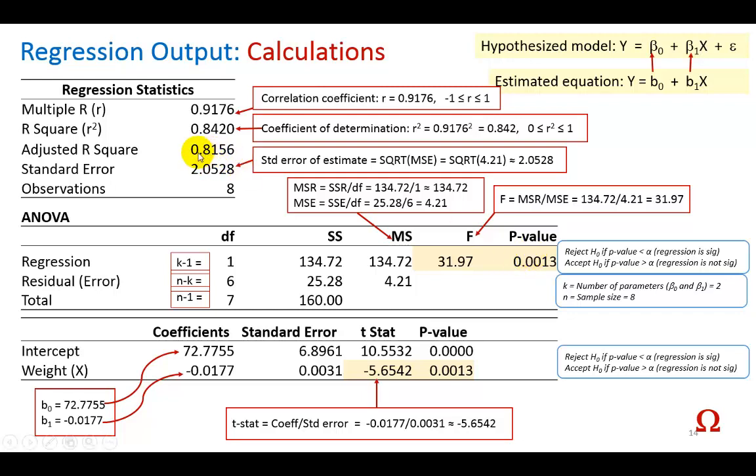Now, you can ignore adjusted r square in the case of a simple linear regression. This is something you'll want to deal with when you study multiple regression. But standard error of the estimates is the third measure of unexplained variation. The first being sum of squares error, the second being mean square error, which is when you divide the sum of squares error by its degrees of freedom. Mean square error, therefore, is going to be like a variance measure. If you take the square root of this 4.21, you're going to find the standard error, which is like a standard deviation.